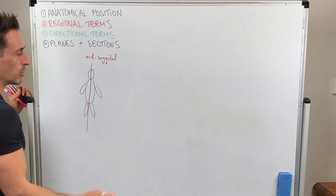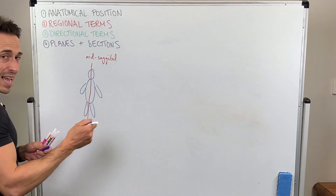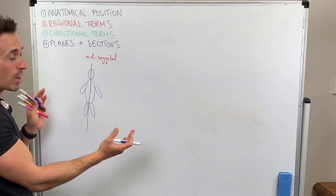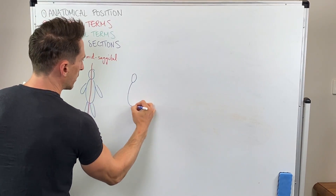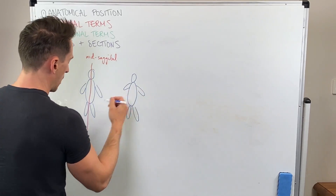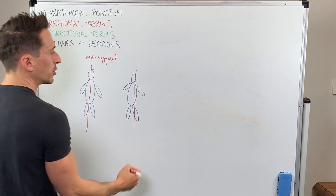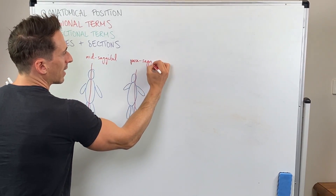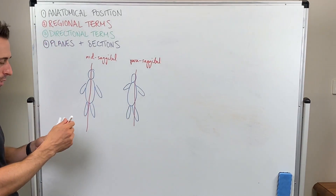A mid-sagittal plane gives equal left and right sections. You can also do a parasagittal section — para meaning next to — which is just off to the side a little bit. A parasagittal section still separates into left and right sections, but they are unequal.